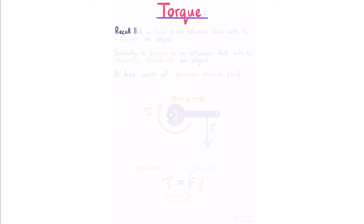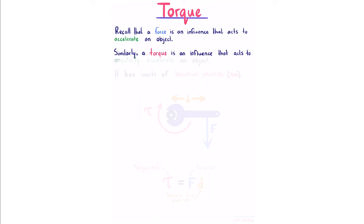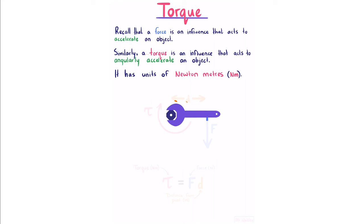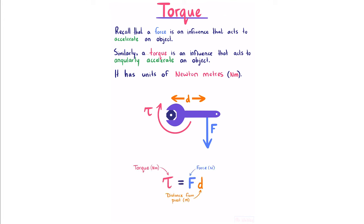Torque. Recall that a force is an influence that acts to accelerate an object. Similarly, a torque is an influence that acts to angularly accelerate an object; it has units of newton meters. If we exert a force on a wrench at a particular distance, the torque produced has magnitude: torque = force × distance.